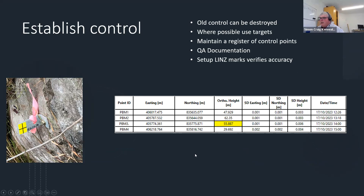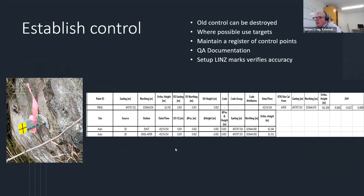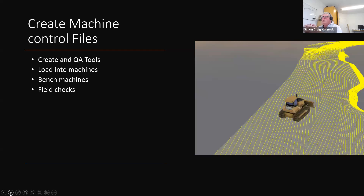When putting in new control, you need QA documentation. For a point like PMM2, I set up two static vectors, recorded the accuracies and mean value, and did a gross error check with RTK — getting a nine-millimetre check, confirming no processing errors such as a wrong geoid model. Another good idea is to set up a LINZ benchmark as part of your control. Set up three or four of them during the project and your as-builts are on the right datum — and you're also doing something good for the community.